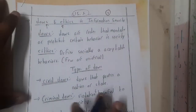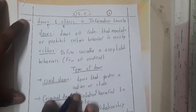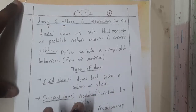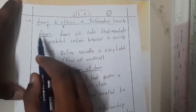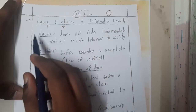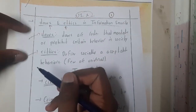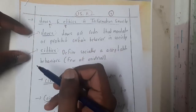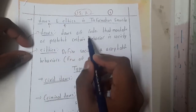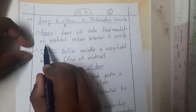This complete lecture will be just theoretical. So let us start. What is a law and what is an ethic? Most of the time we all get confused about these terms. Laws are the rules that are mandatory or prohibit certain behaviors in society.